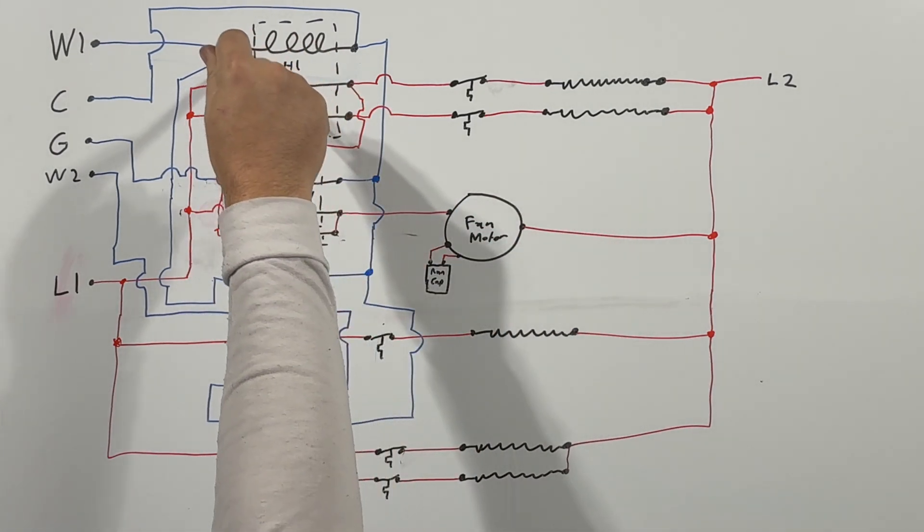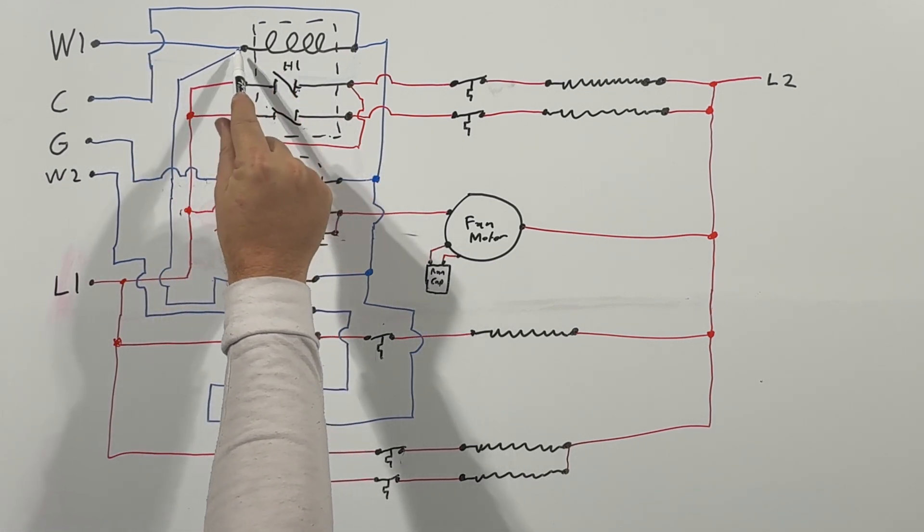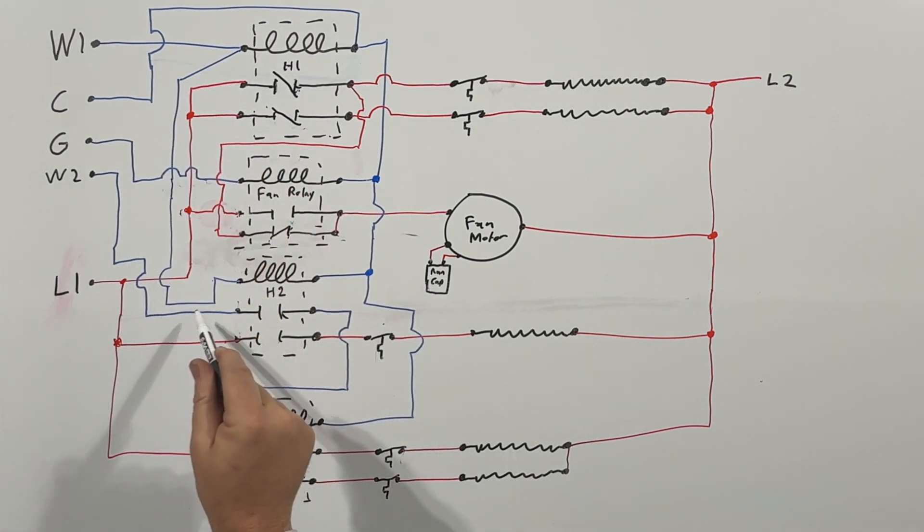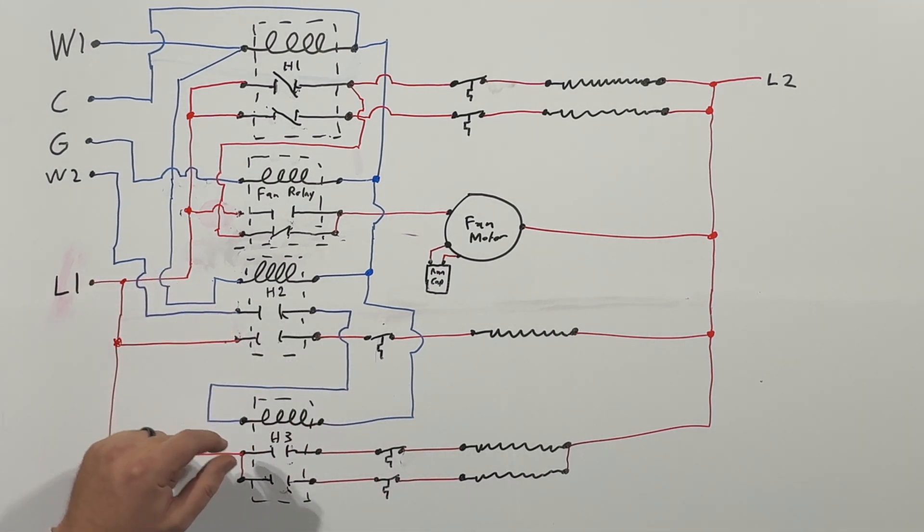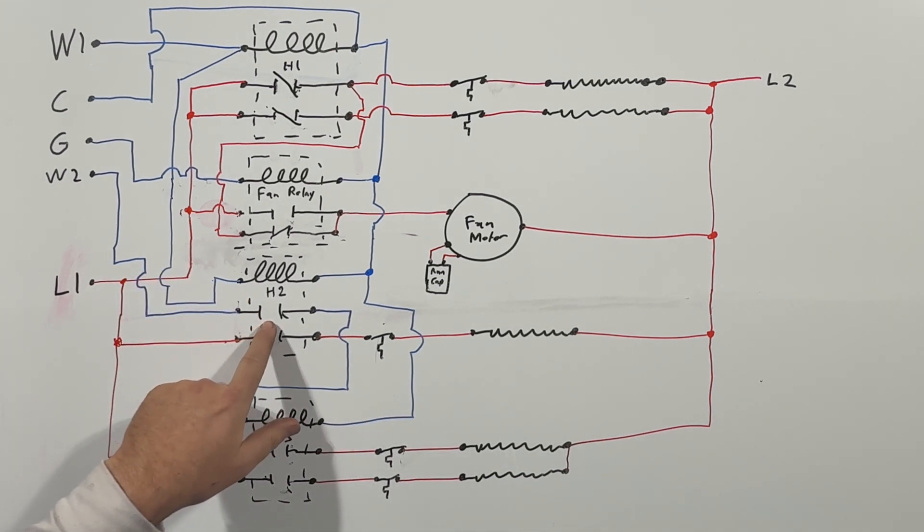Okay, now 24 volts, it's also bounced off, comes out here. So from our W1 it's energizing this one, but then it's also bouncing off, coming down and hitting our second heat relay, H2, energizes this coil.